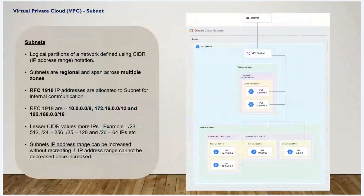Next is RFC1918. This is used for private communication — internal private IP addresses communicate internally. There are three ranges in RFC1918: 10.0.0.0/8, 172.16.0.0/12, and 192.168.0.0/16. All private IP addresses are created within these RFC1918 ranges.